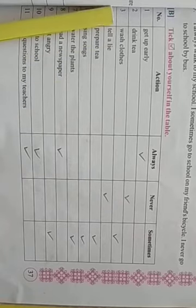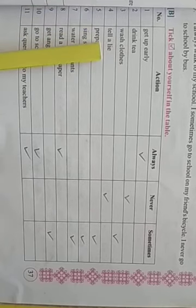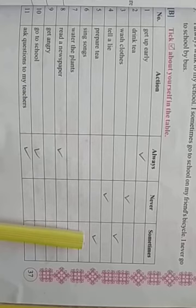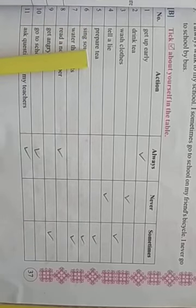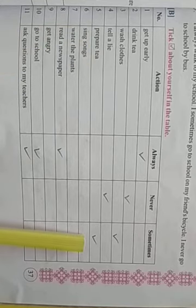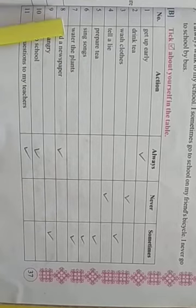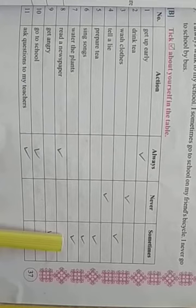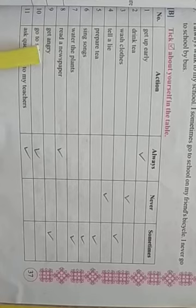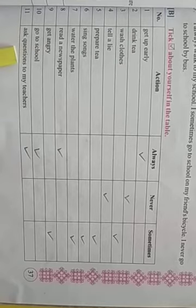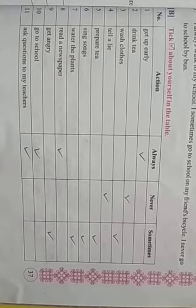For example, number three: wash clothes, so never. Number four: tell a lie, so sometimes. Number five: prepare tea, so sometimes. Number six: sing songs, sometimes. Number seven: water the plants, sometimes. Number eight: read a newspaper, always. Number nine: get angry, sometimes. Number ten: go to school, always. Number eleven: ask questions to my teachers, always.